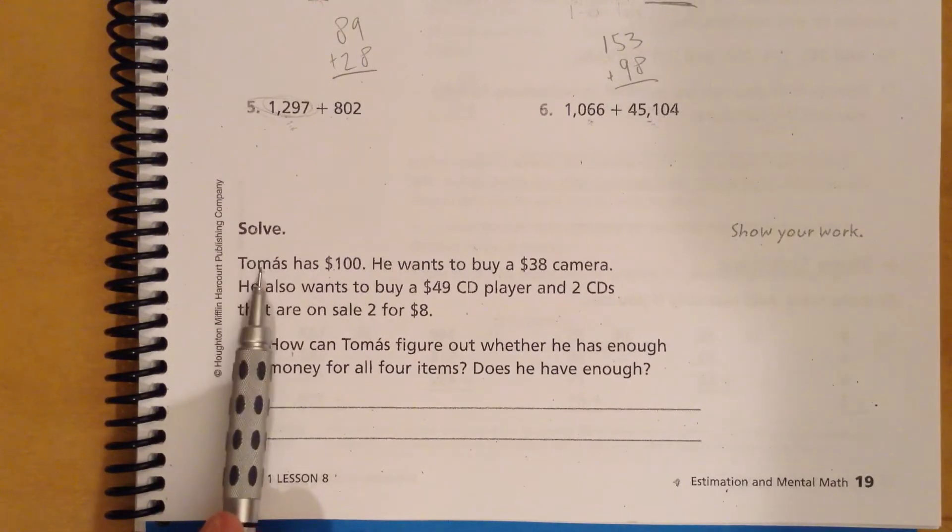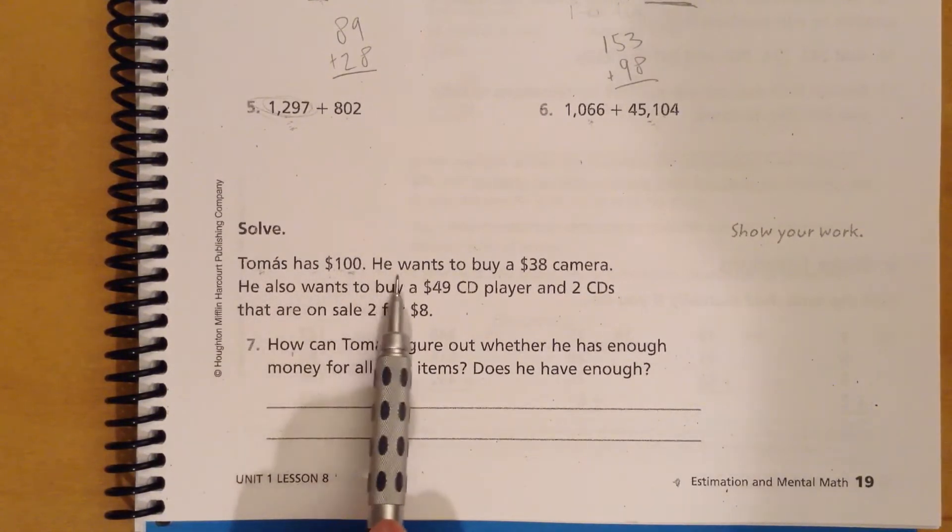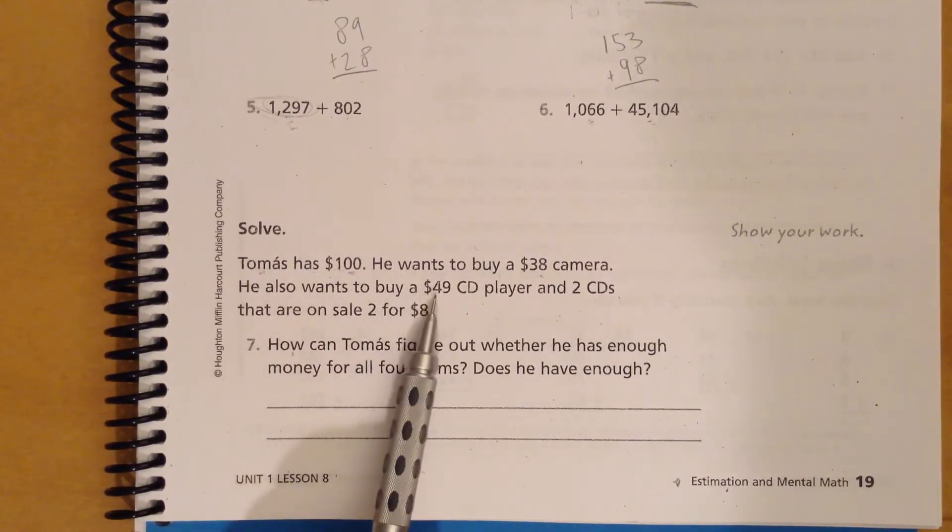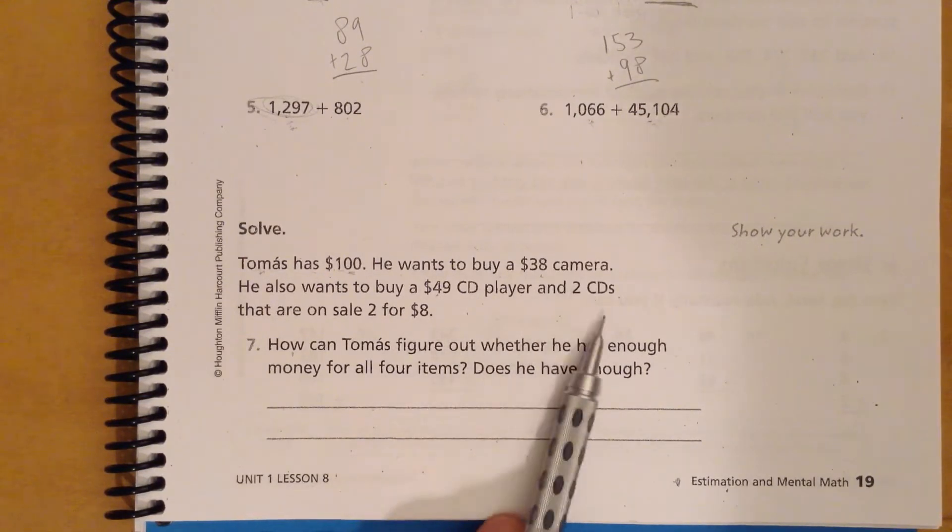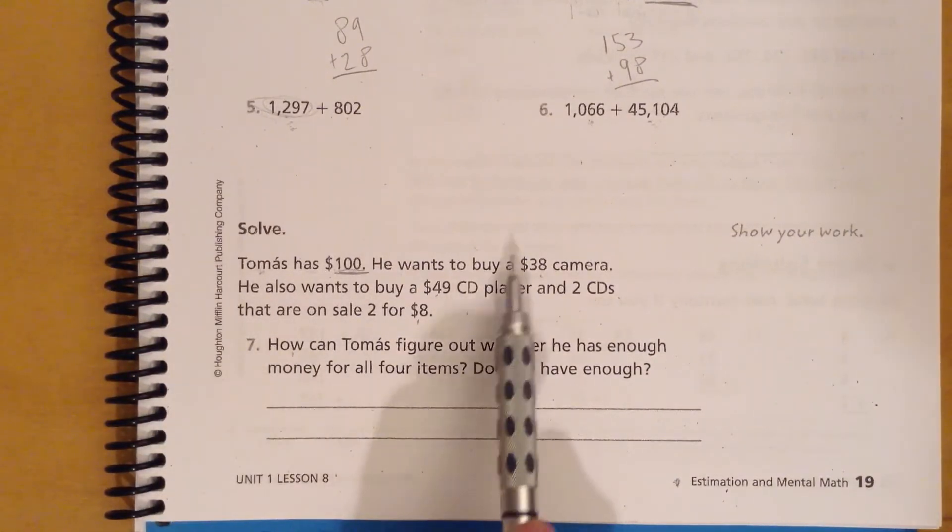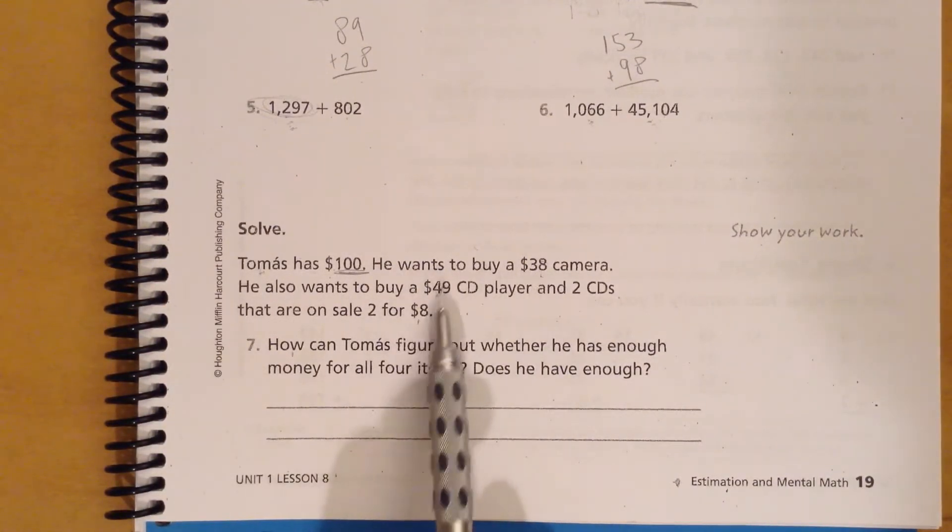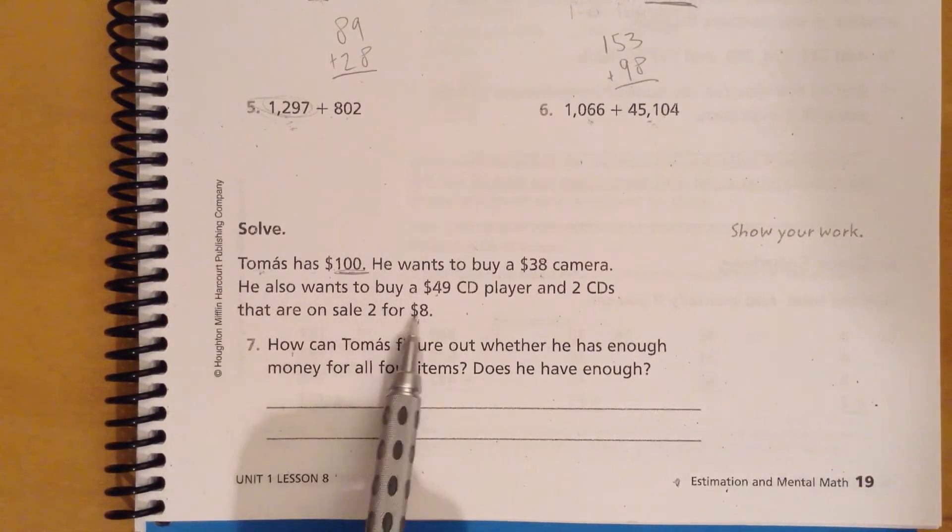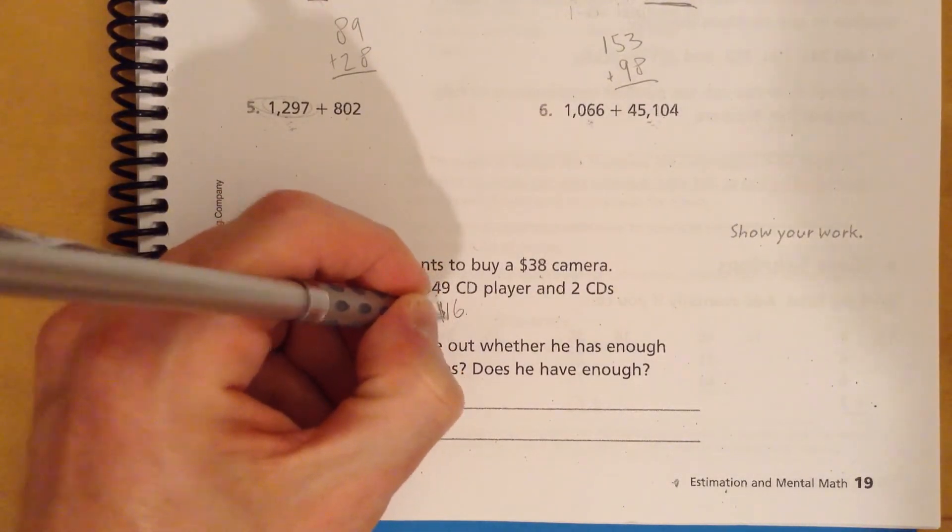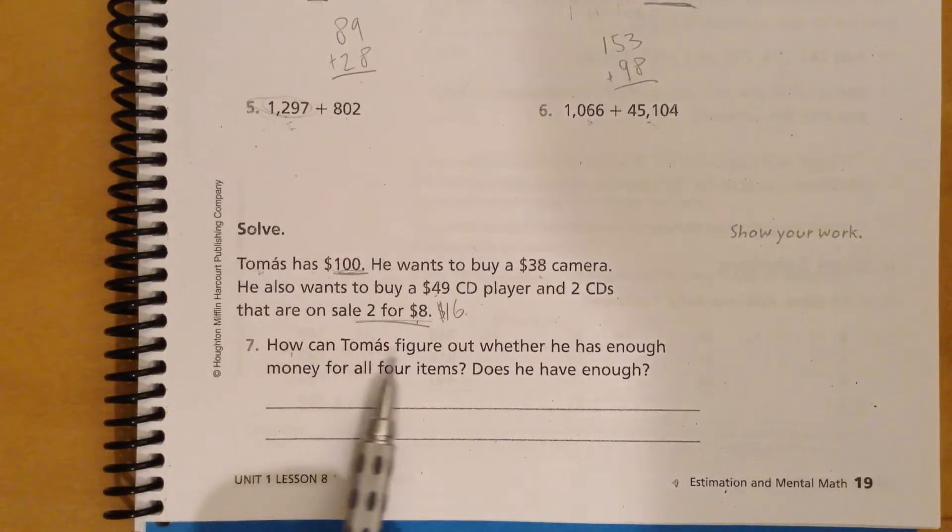So, down here, we have Tomas has $100. He wants to buy a $38 camera. He also wants to buy a $49 CD player and two CDs that are on sale for $8. Okay. So, this is how much he has total. We're trying to figure out if he has enough money to buy all of these. Now, something to keep in mind is there are two CDs for $8. So, that's actually going to be $16, exactly, right? So, how can Tomas figure out whether he has enough money for all four items? And does he have enough? So, really,